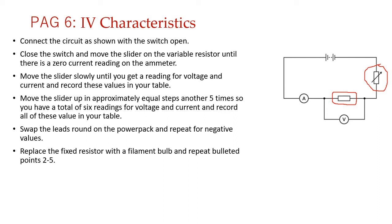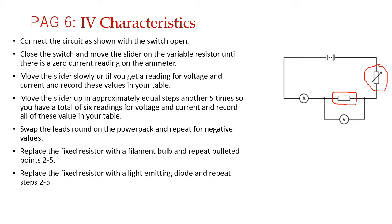For the filament lamp, keep the variable resistor at minimum current and start varying it. For each position, note the voltage and current. Get six values, then swap the leads of the power pack to get negative values — another six sets — then you're ready to draw the graph. Once that's done, one more component remains: the diode. Connect the diode and repeat the same steps.